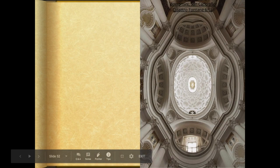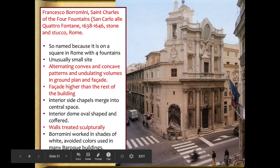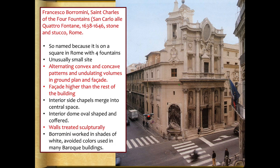The next cathedral you have to know is San Carlo alle Quattro Fontane by Francesco Borromini. The most important feature to know is the undulating exterior walls, which create a wave-like pattern — to me it resembles Petra in Jordan. It is named for the square it sits in, where there are four fountains. It occupies a very tight, small site. The facade features alternating convex and concave patterns creating that wave-like undulation, and it rises higher than the rest of the building.